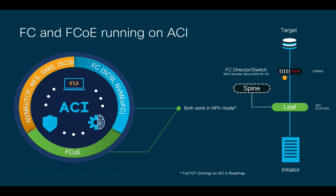It is important to mention that Fiber Channel and Fiber Channel over Ethernet is not VXLAN encapsulated. Therefore, it is not sent to the spine layer, but directly to the Fiber Channel or FCoE director. Then, such director would receive the FLOGI and send a Fiber Channel ID back to the initiator through the NPV switch, in this case, the Nexus 9K leaf node.